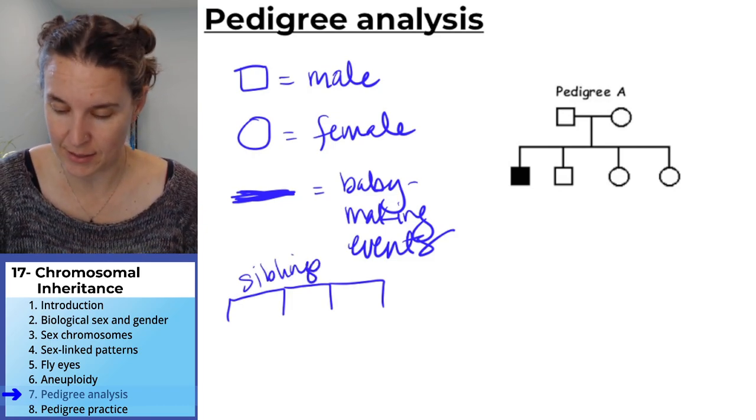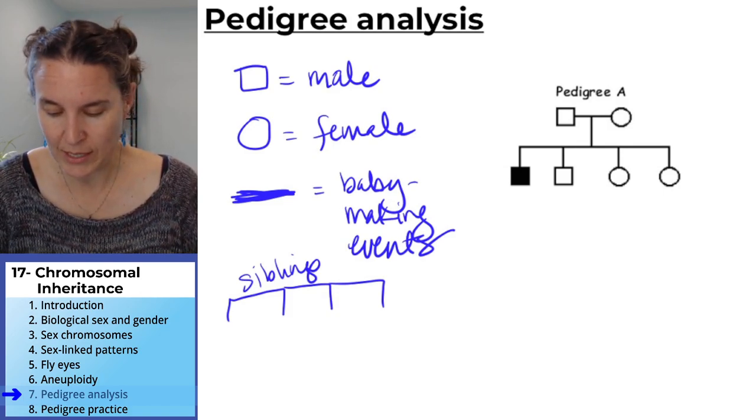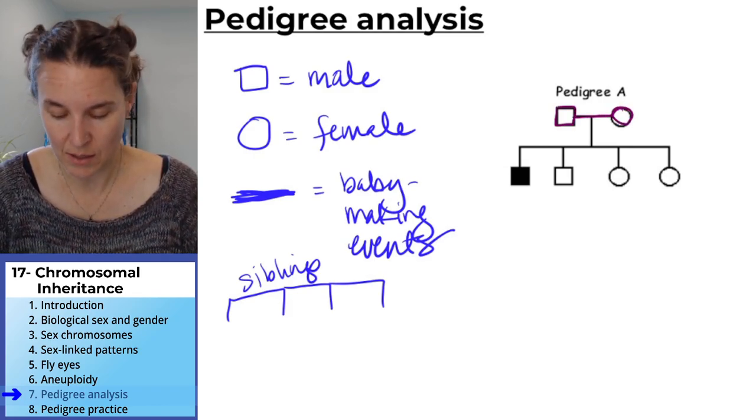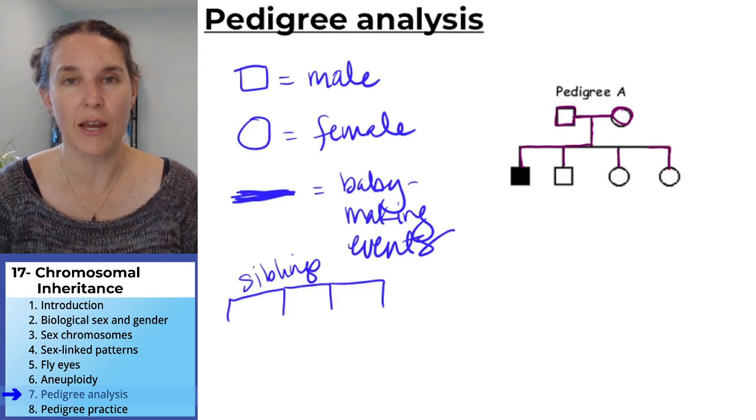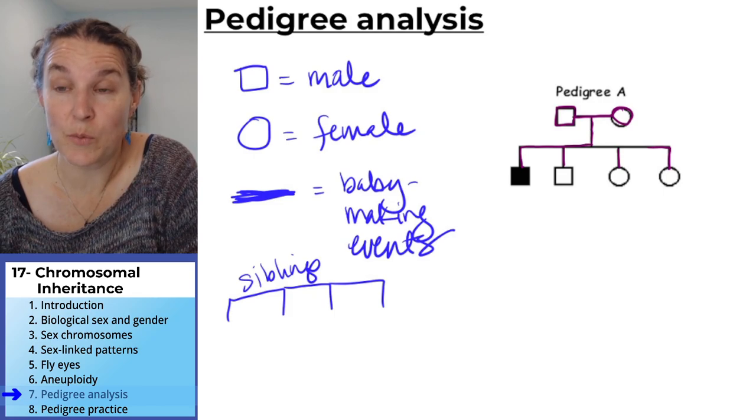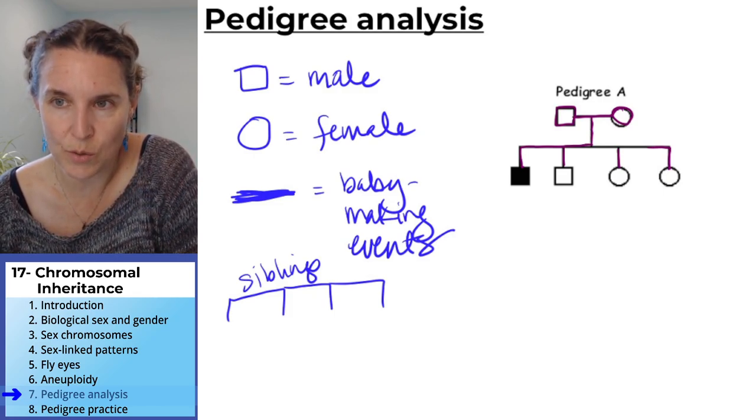So let's look at this example. I have pedigree A sitting here. It's super simple so that we can see. We have a male, we have a female, they had a baby making event and then they produced - every one of these things is produced, those are humans. Every one of those humans was produced by the baby making events of the top two people.